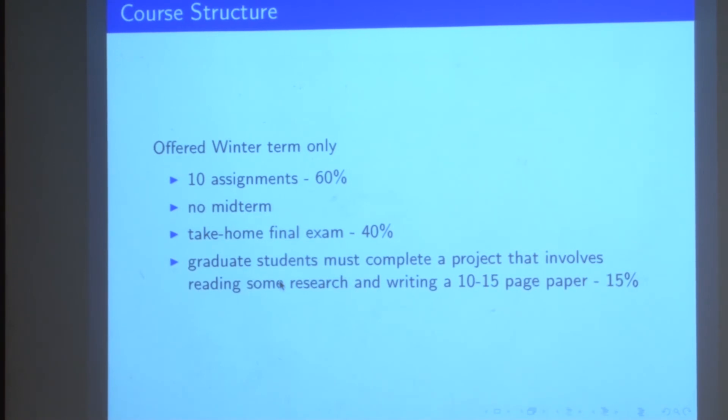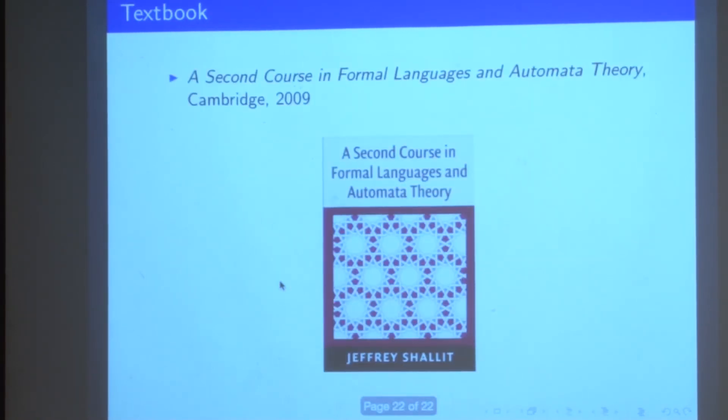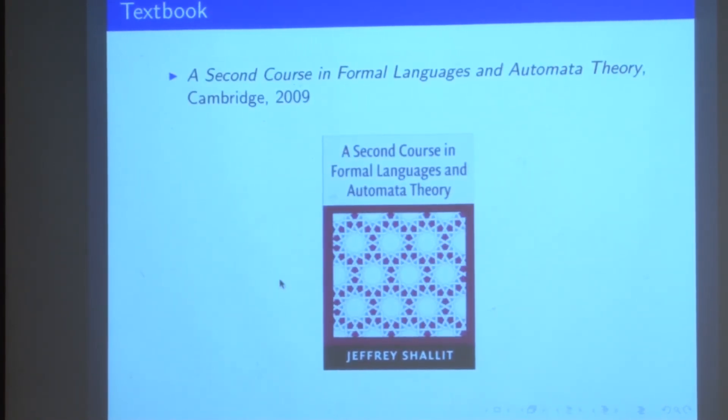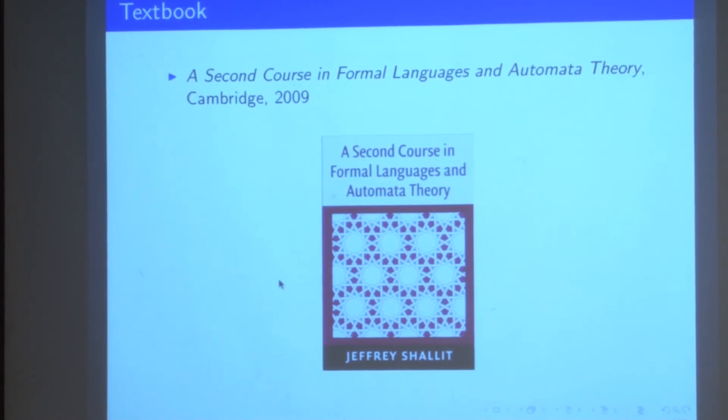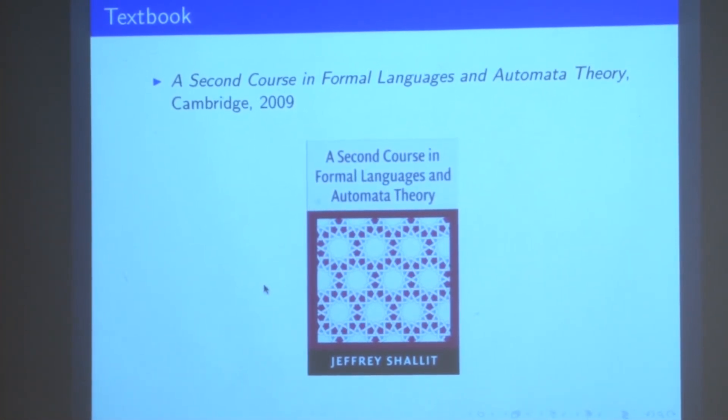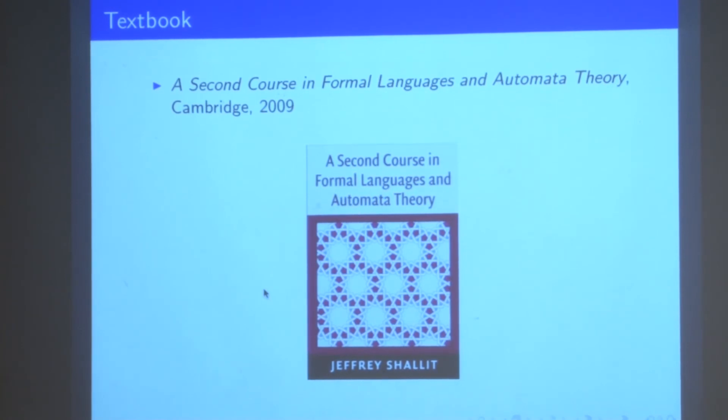And that's worth 40% of the mark. If you're a grad student, you do a little extra work. And the textbook for the course is this one. The author is a well-known jerk, but the book is good. And the cover is done by Waterloo's own Craig Kaplan.